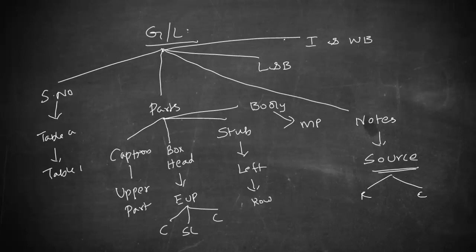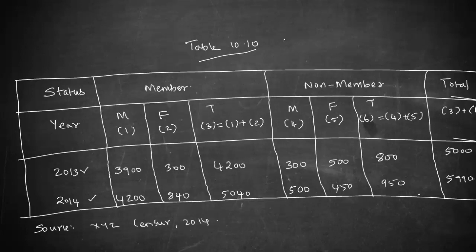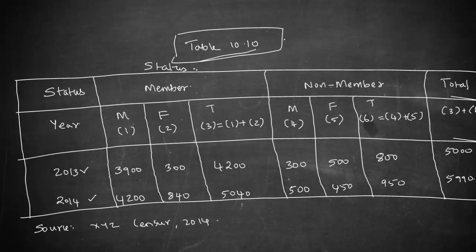Let us see how a typical statistics table will look like. This table has what is known as the table serial number — here you find table 10.10. Then we give a caption to the table, for example: 'Status of workers of X Limited based on union membership.' There is a company called X Limited and they are studying their workers based on whether they are members of a union or not.